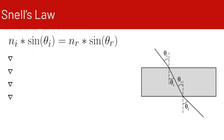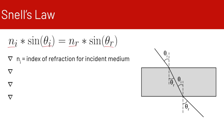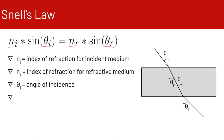Let's talk about Snell's Law. Here's the equation: n sub i times sine of theta sub i equals n sub r times sine of theta sub r. n sub i is the index of refraction for the incident medium, n sub r is the index of refraction for the refractive medium, theta sub i is the angle of incidence, and theta sub r is the angle of refraction. The index of refraction for air, for example, is 1.0.